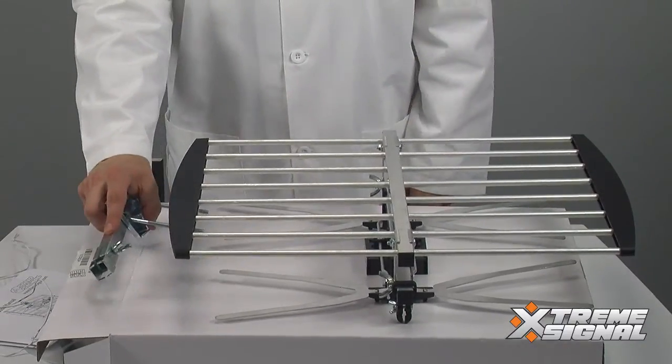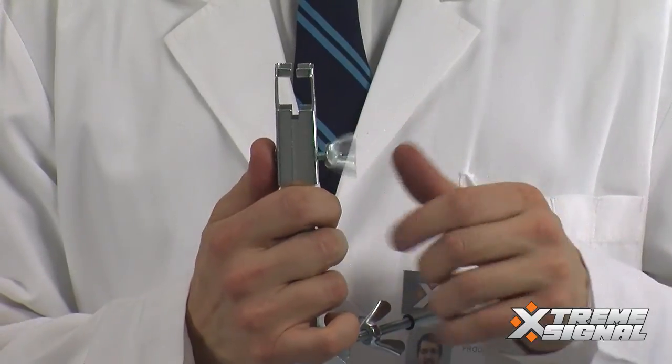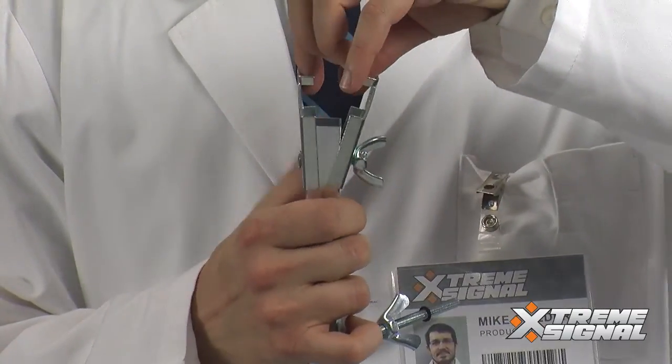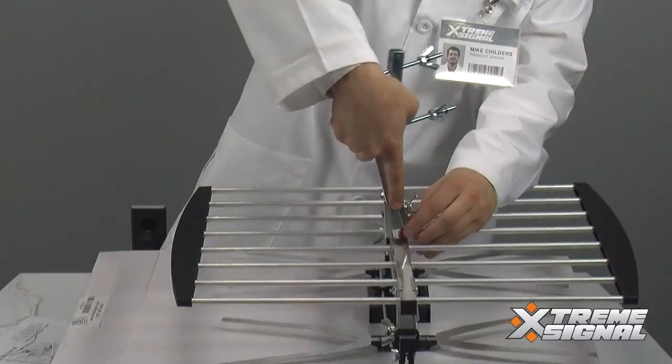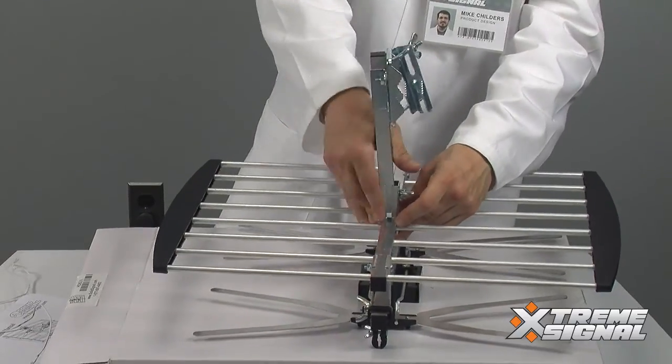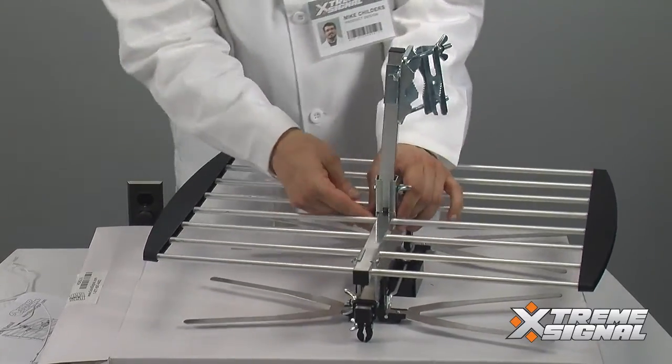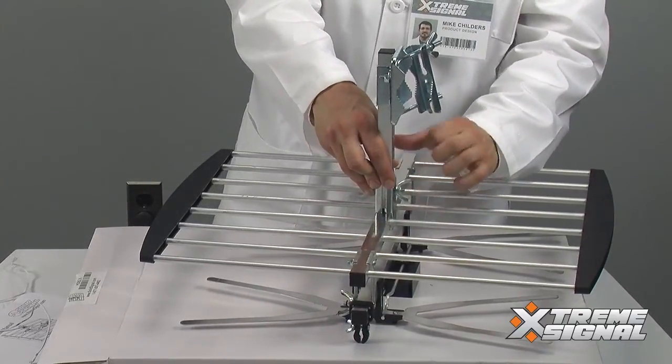This is the mounting bracket. The idea here is to loosen up this wingnut enough to get this bracket to open up. You're going to want to clamp it down in the middle of the antenna. Once you have that locked in, perfect. Dial that wingnut back.